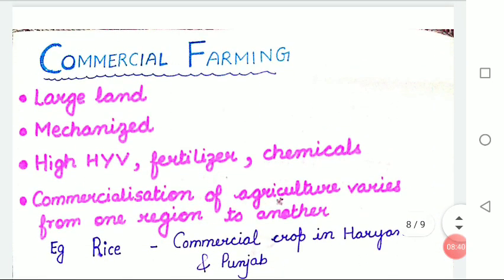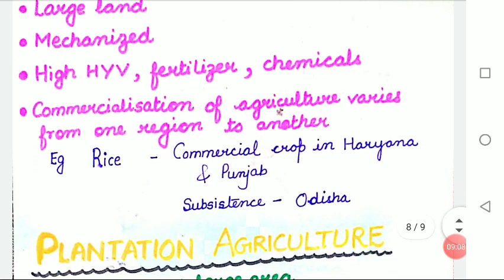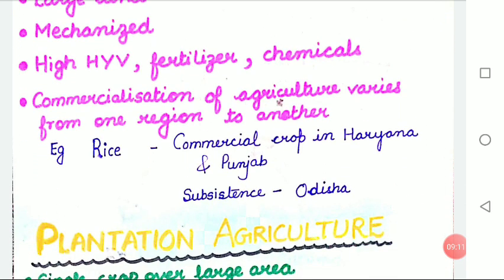Now, commercial farming. The main characteristics of this type of farming is the use of higher doses of modern inputs — high yielding variety of seeds, chemical fertilizers, insecticides and pesticides — in order to obtain higher productivity. The degree of commercialization of agriculture varies from one region to another. For example, rice is a commercial crop in Haryana and Punjab, but in Odisha, it is a subsistence crop.